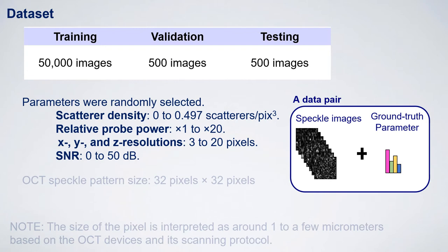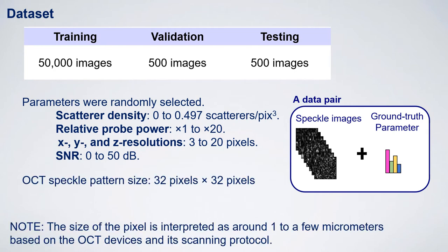The random selection range of the scatter density is from 0 to 0.497 per cubic pixel, 0 to 50 dB for the signal-to-noise ratio, and 3 to 20 pixels for the lateral resolution. Each OCT speckle pattern consists of 32×32 pixels, where the size of a pixel is interpreted as around 1 to a few microns depending on the OCT device and its scanning protocol.